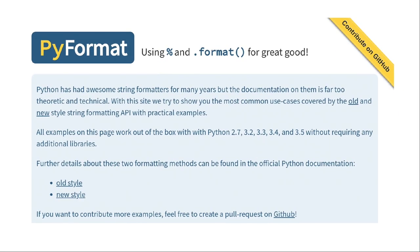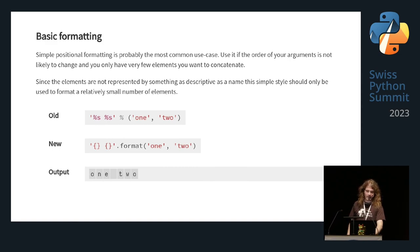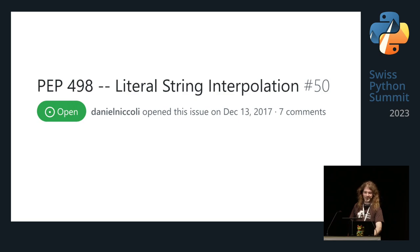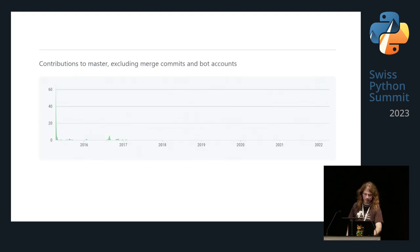There was this website, pyformat.info, that I've really liked for a while, because it tells you about the string formatting mini-language and how it works based on a couple of examples — old-style percent formatting, and the newer string.format. But there's something missing: that's f-strings. Someone opened an issue about that in 2015, another one two years later, yet another one two years after that. But that project was pretty much dead.